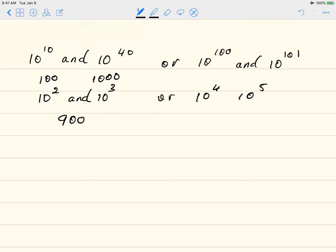And 10 to the 4th, so that's 10,000. And 10 to the 5th is 100,000. So 100,000 minus 10,000 is going to give us 90,000.